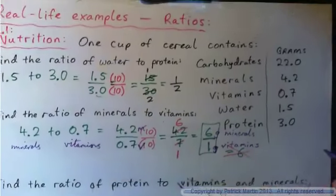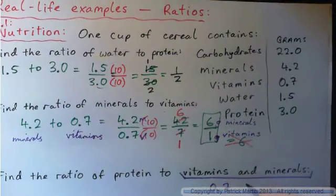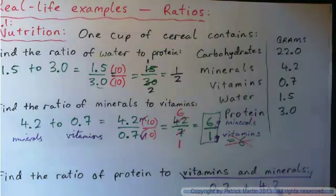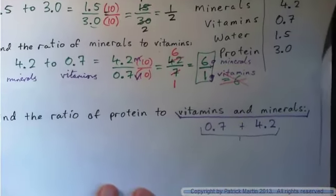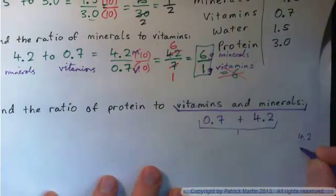Vitamins and minerals means you've got to take the vitamins, 0.7, and the minerals, 4.2, and you've got to add them together. Vitamins and minerals together makes, if you add these, 4.2 plus 0.7, add them.